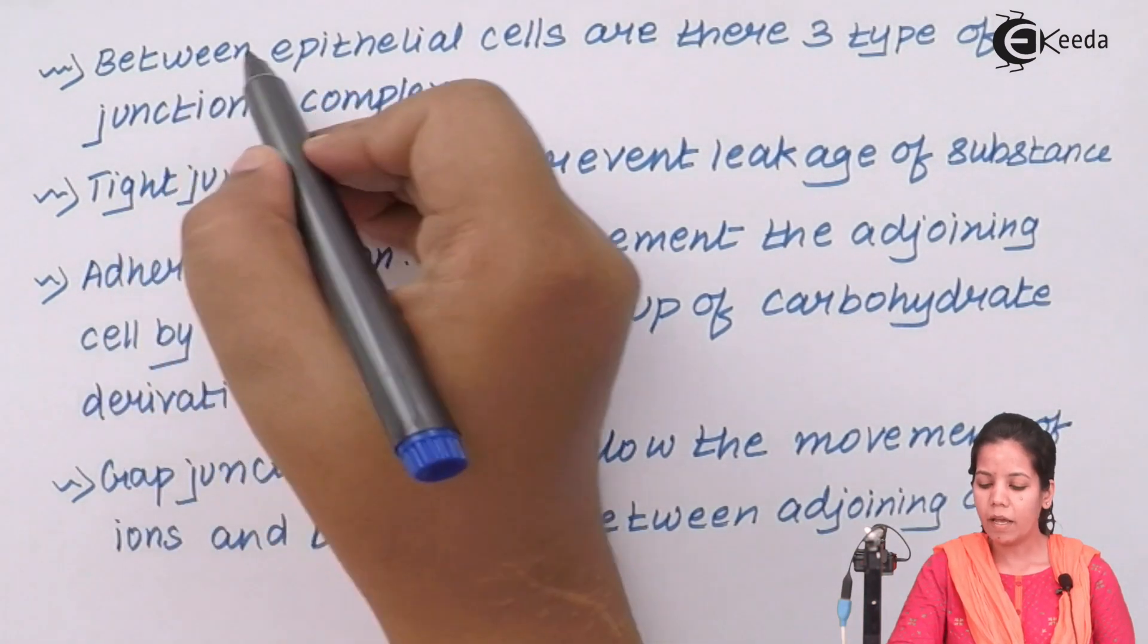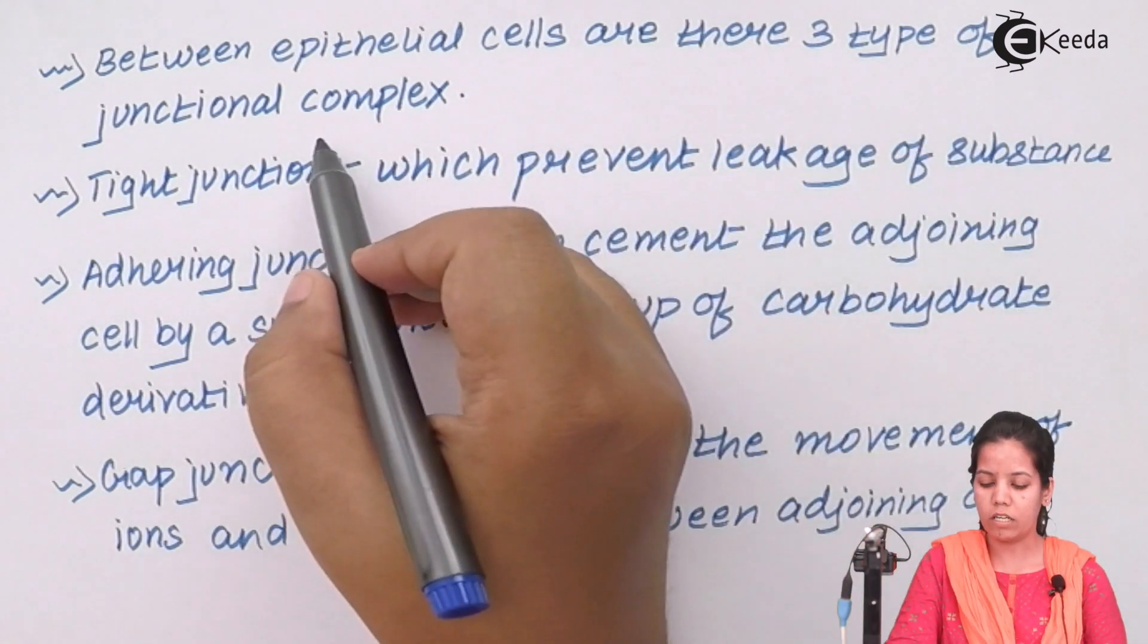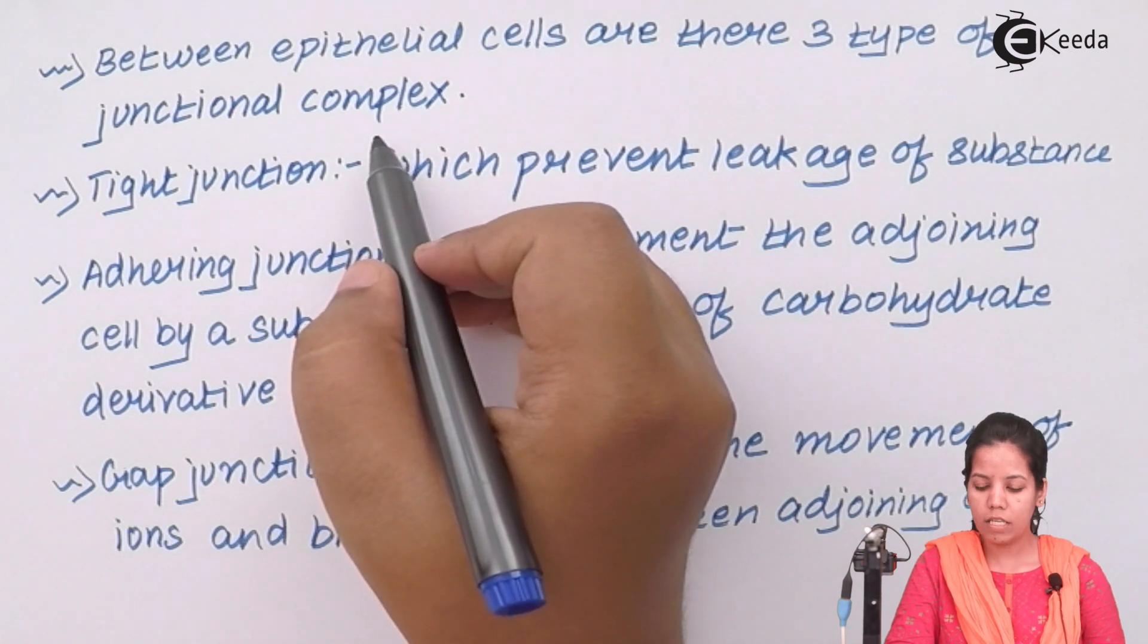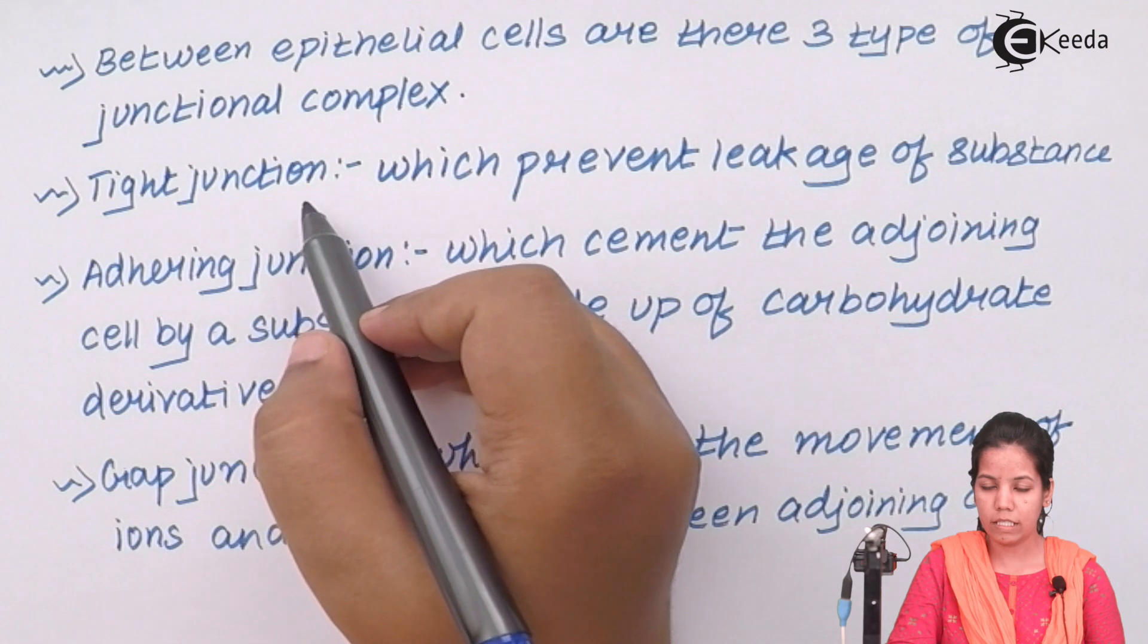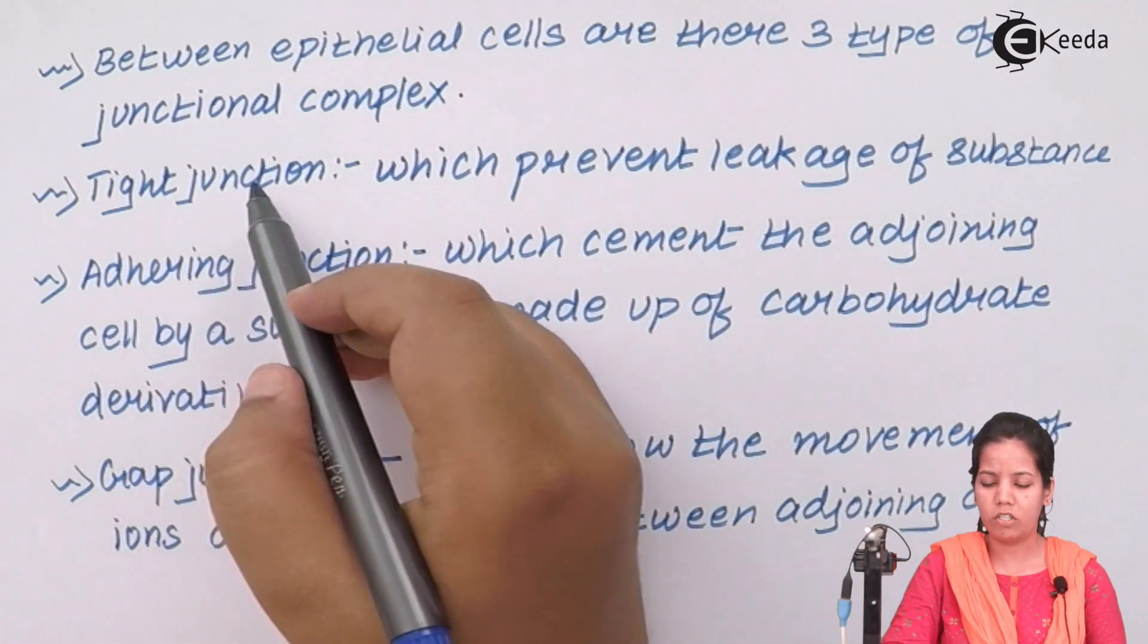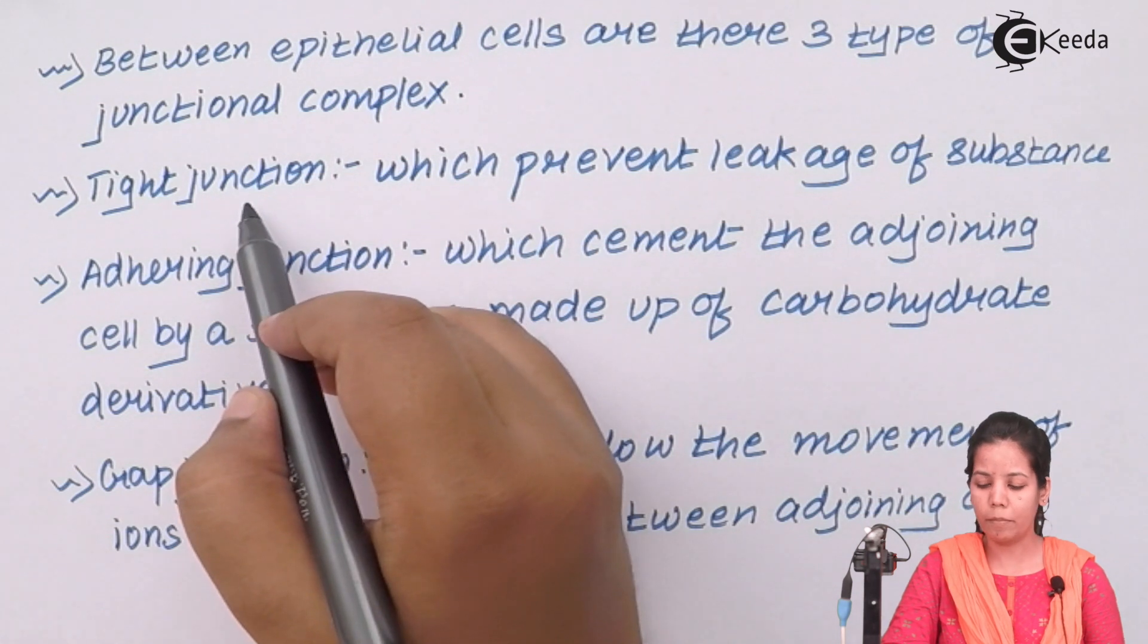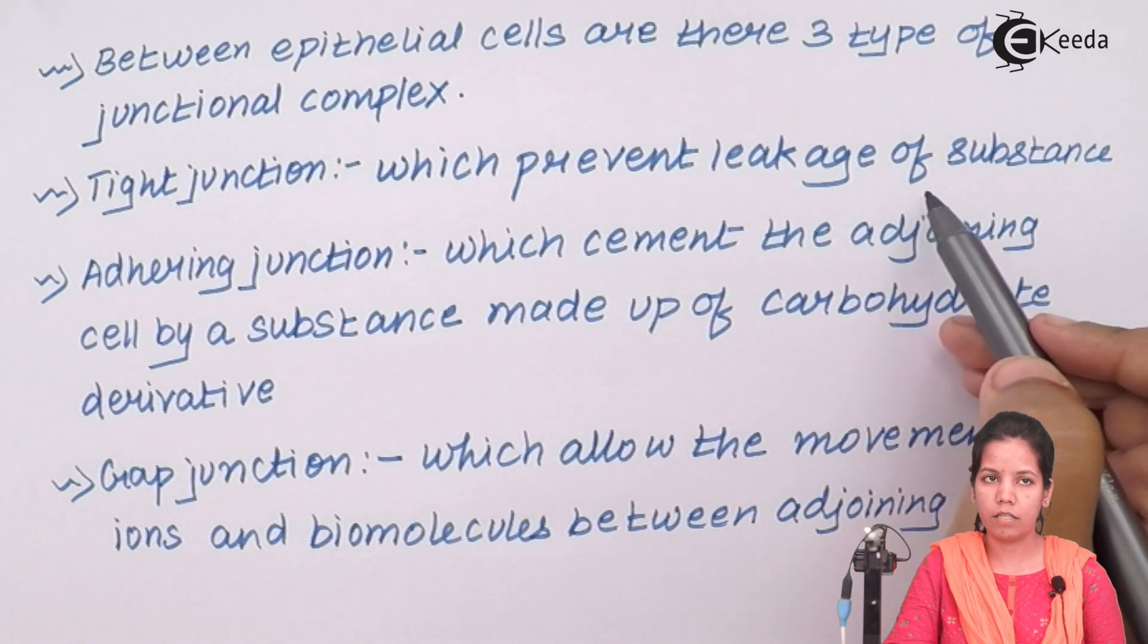Between epithelial cells, you observe three types of junctional complexes: tight junctions, adhering junctions, and gap junctions. Tight junctions are layers of epithelial cells which prevent leakage of a substance. They don't allow certain molecules present inside epithelial cells to ooze out or move out.